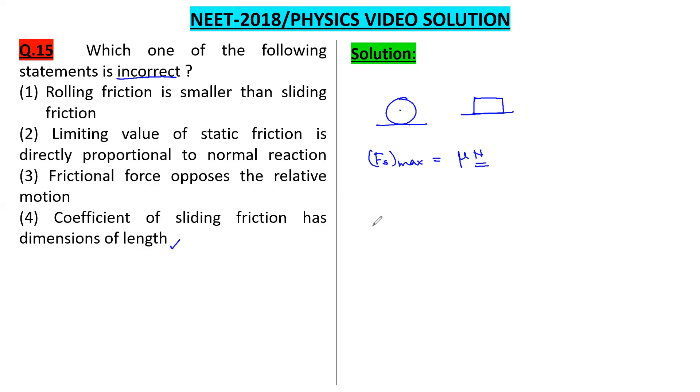Coefficient of sliding friction - we know that μ equals F_R by N. So the coefficient of sliding friction is friction divided by normal reaction. Obviously, friction and normal reaction both are forces, so μ should be dimensionless. But statement 4 says it has dimensions of length, which is incorrect. So option 4 is the correct answer in this case.